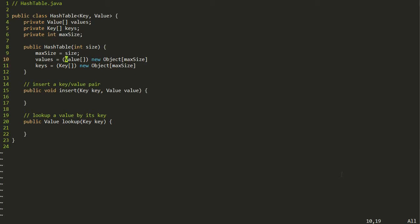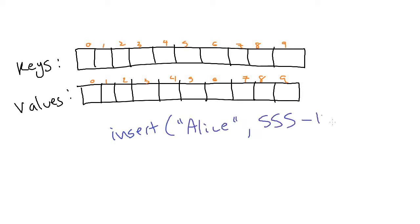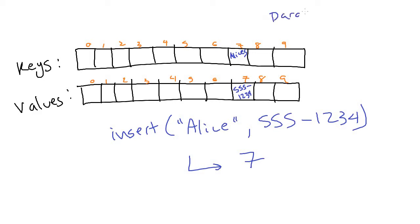On the whiteboard: we have an array called keys and an array called values, both the same size. When we do an insert — say we insert Alice with her phone number — we put the key Alice through the hash function and get out whatever index she's supposed to be at, let's say 7. Then we put the key in slot 7 of the keys array and the phone number in slot 7 of the values array. These are called parallel arrays because the same index in both arrays corresponds to the same record.